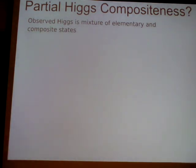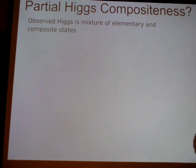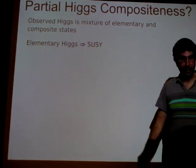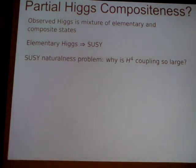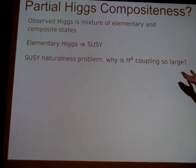Partial Higgs compositeness is another idea where you could try to have composite, strong dynamics play some role in the Higgs sector. The idea is that the observed Higgs is a mixture of elementary and composite states. If I have an elementary Higgs state in the theory, the only sensible framework for that is supersymmetry. Now why, if we have supersymmetry, are we talking about any compositeness? The issue is that supersymmetry generically predicts that the quartic coupling is not big enough — that's a problem we have in supersymmetry.